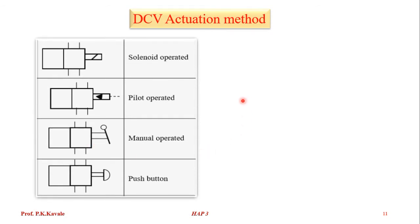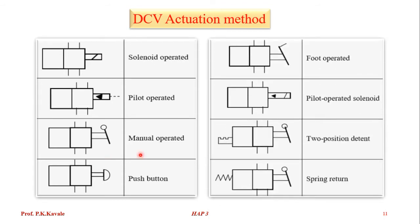The methods for DCV actuation: to operate a DCV, we require some force applied by some means. These include solenoid-operated DCV, pilot-operated DCV, manual-operated push-button type, foot pedal-operated DCV, pilot-operated solenoid, two-position spring return. These are all represented by ISO symbols, and these are the methods of DCV actuation.